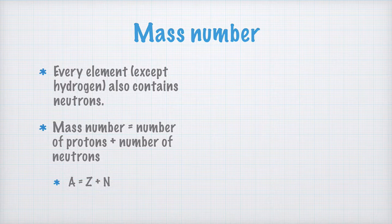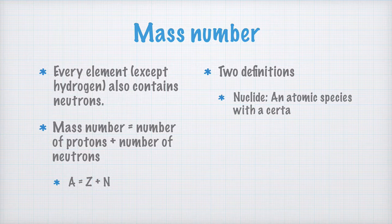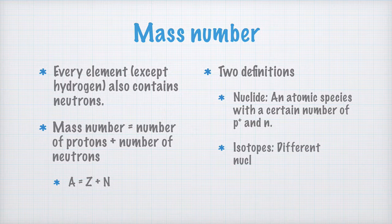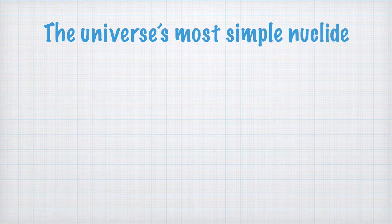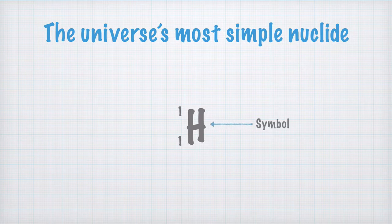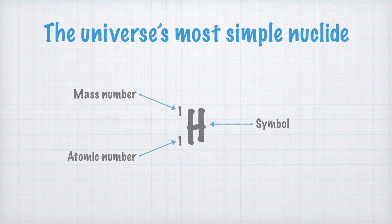Before we move on, you need to be familiar with these definitions. First of all, a nuclide is an atomic species with a certain number of protons and neutrons. Isotopes, then, are different nuclides of the same element — that is, atomic species with the same number of protons but different number of neutrons. We start by looking at the simplest nuclide in the whole universe: a hydrogen atom with atomic number 1 and mass number 1. The chemical symbol for hydrogen is H, and we write the mass number superscripted to the left of the symbol. The atomic number is written subscripted to the left of the symbol.